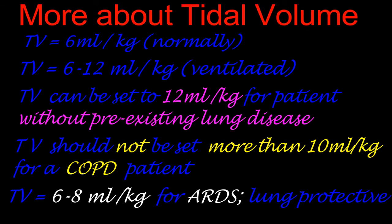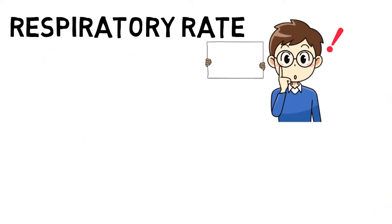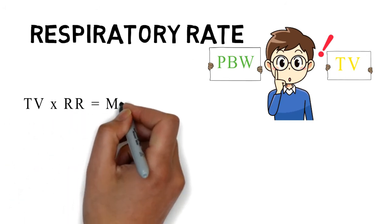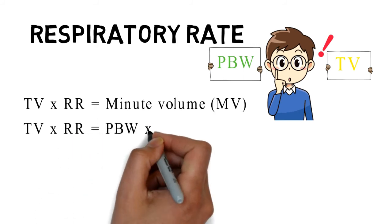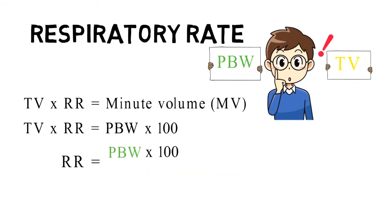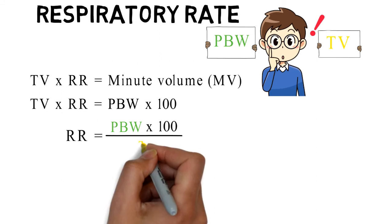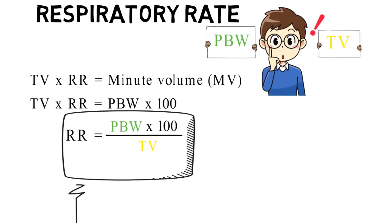The third one is respiratory rate. How can we calculate respiratory rate from two known values, predicted body weight and tidal volume? As we know, tidal volume times respiratory rate gives minute volume, and minute volume is also equal to predicted body weight times 100. In this way, we can calculate the respiratory rate as predicted body weight times 100 divided by tidal volume. Respiratory rate is 100 times the predicted body weight divided by tidal volume.